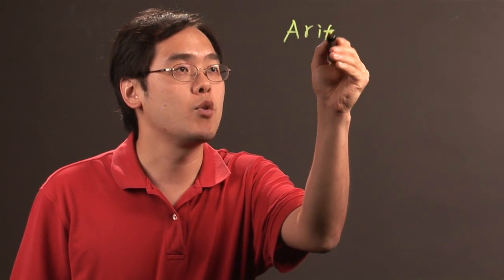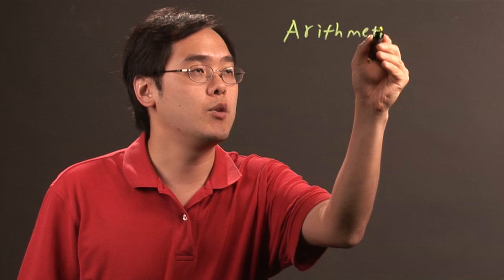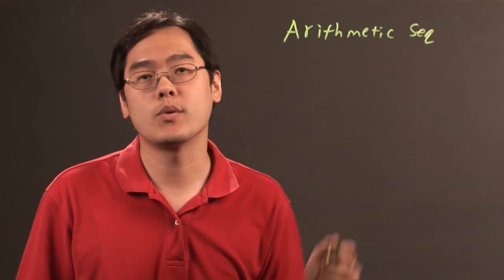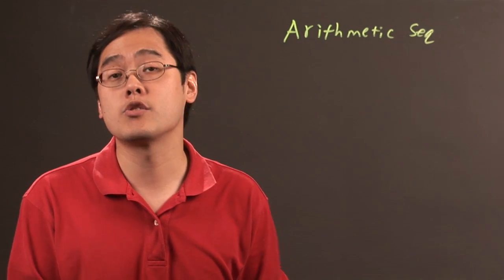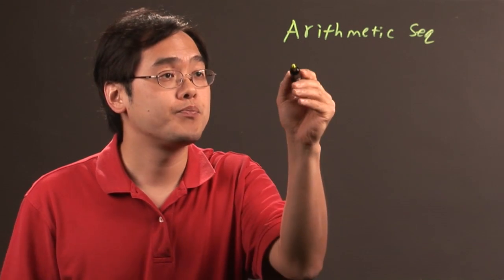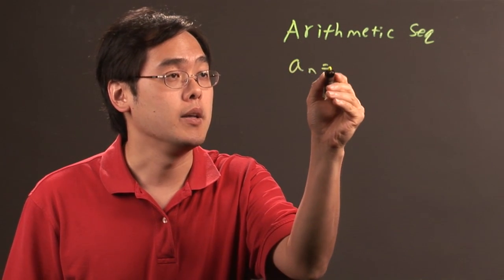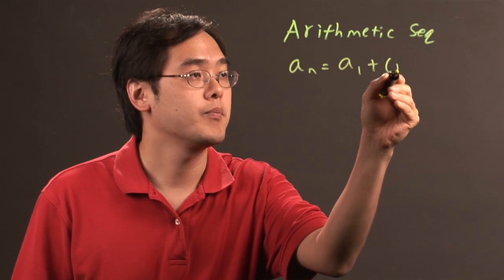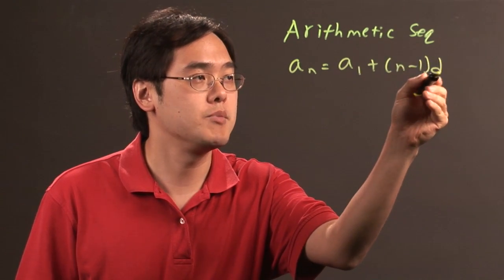One sequence is an arithmetic sequence. An arithmetic sequence is a sequence of numbers which are separated by addition or subtraction. So, the formula here is an is equal to a1 plus n minus 1 times d.